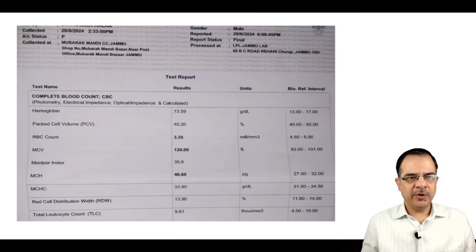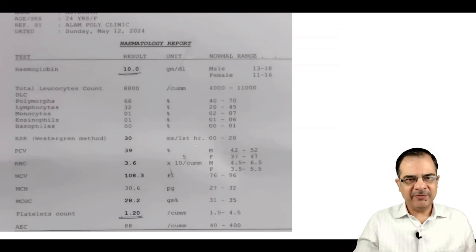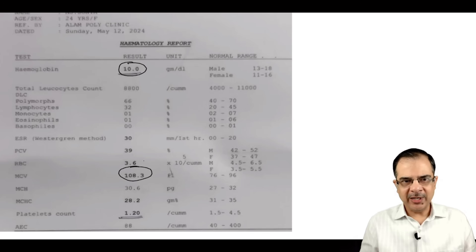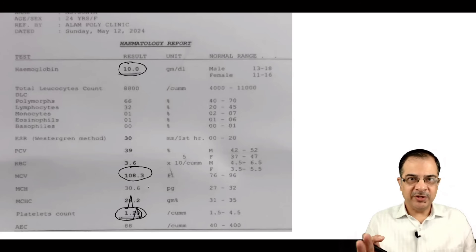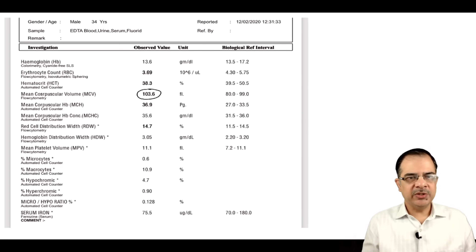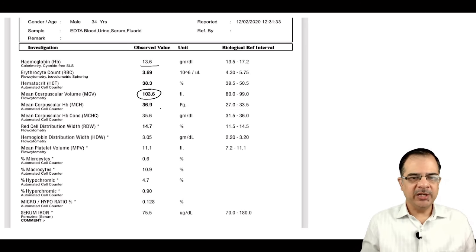Now looking at high MCV cases. When MCV is 120, this is grossly megaloblastic anemia — the patient may have B12 deficiency even if hemoglobin is still within range. Another case: hemoglobin 10, MCV 108. Again, B12 or folic acid deficiency. Note the platelet count — when you see bicytopenia or pancytopenia along with high MCV, always think B12 deficiency. One more: MCV 103, hemoglobin within range, but B12 level less than 50 — confirmed B12 deficiency causing high MCV.